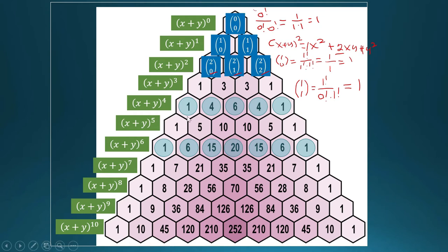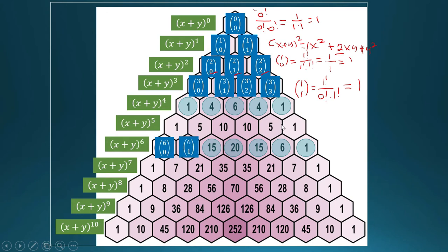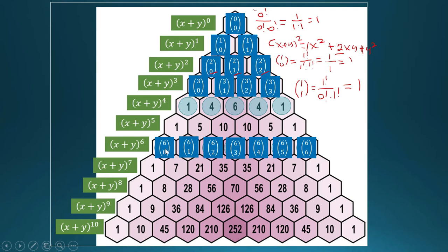So this is the pattern: the numbers in your Pascal triangle can be generated using the combination formula. The numerical coefficients of (x + y) cubed can be generated using three taken zero, three taken one, three taken two, three taken three. For (x + y) raised to six, the coefficients are six taken zero, six taken one, six taken two, and so on — there is a clear pattern and logic to this.